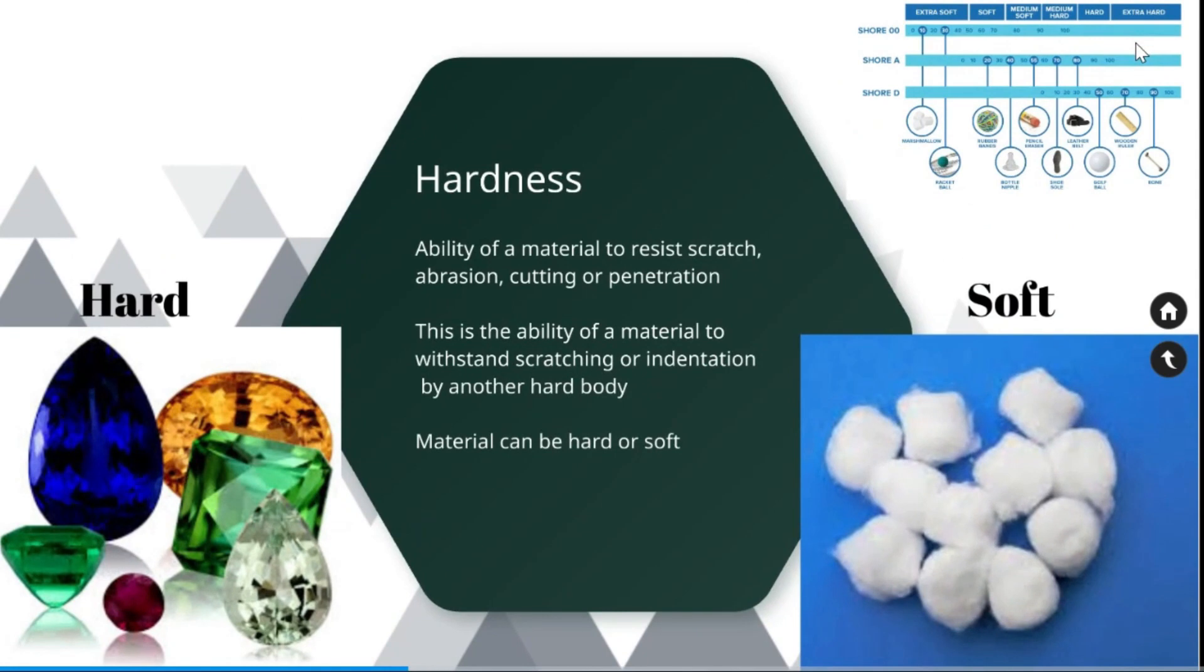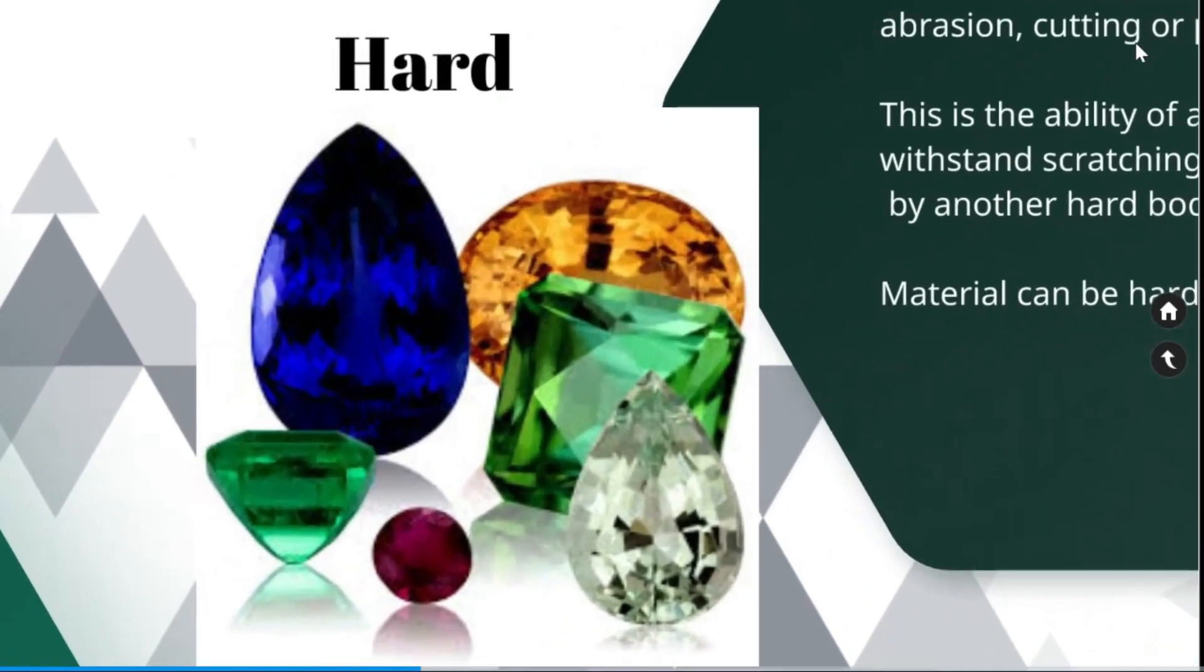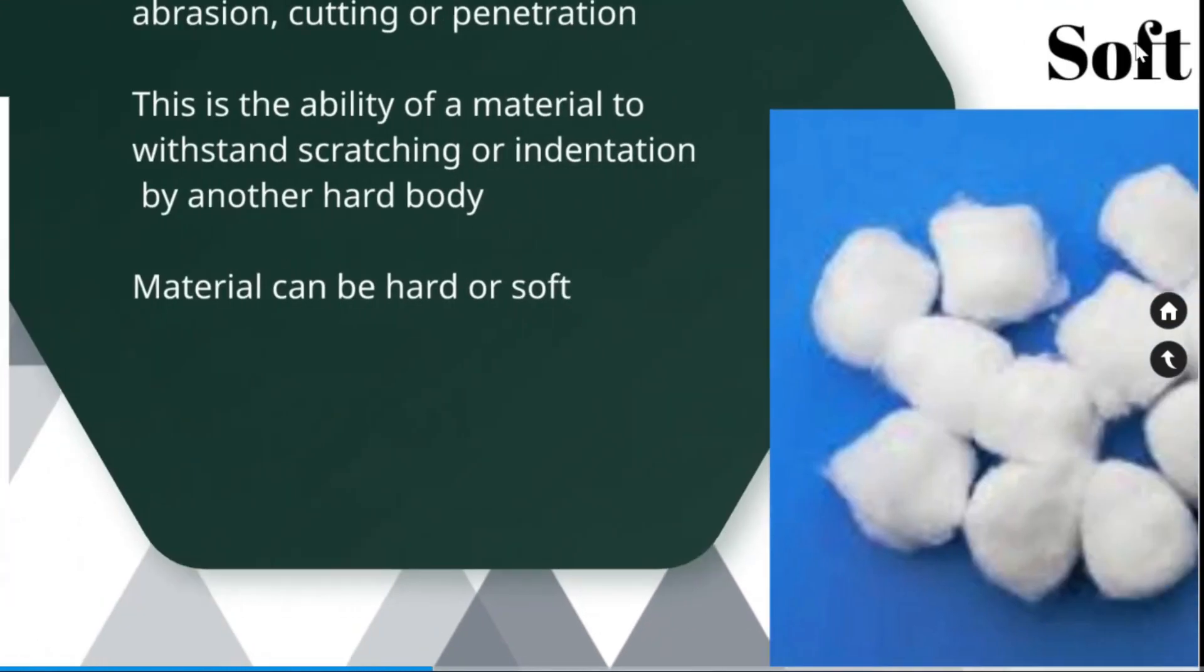Hardness. The ability of a material to resist scratch, abrasion, cutting or penetration is called hardness. This is the ability of a material to withstand scratching by another hard body. Material can be hard or soft as shown in the images.